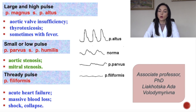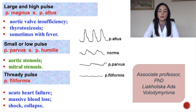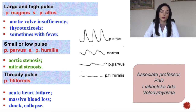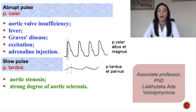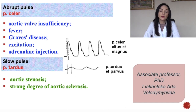If you feel a small or low pulse it is called pulsus parvus. It can occur during aortic and mitral stenosis. A thread-like pulse we call pulsus filiformis — occurring in acute heart failure, massive blood loss, shock, and collapse. Abrupt pulse, pulsus celer, can be seen during aortic valve insufficiency, fever, Graves disease, excitation, and adrenaline injection.